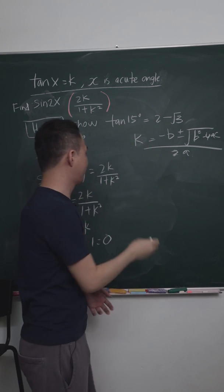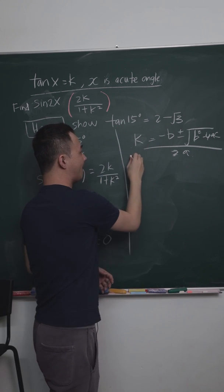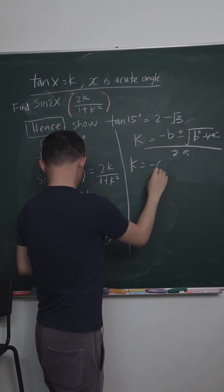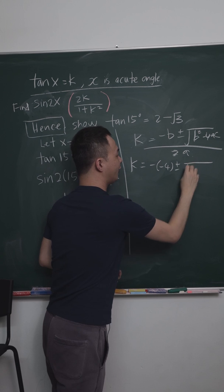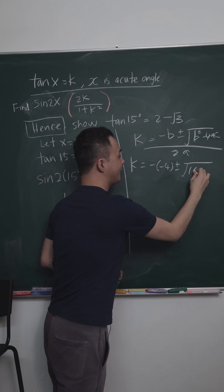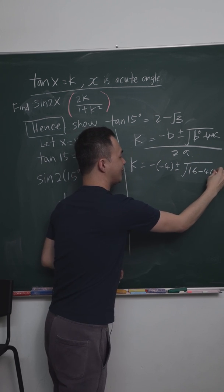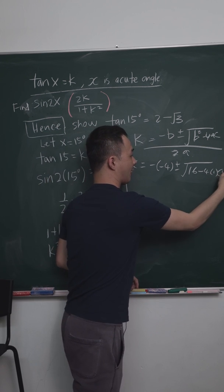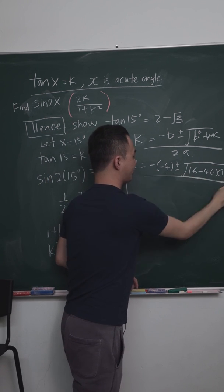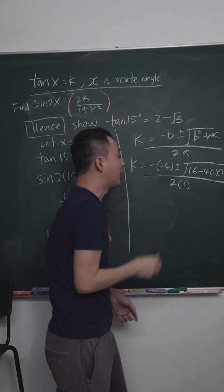Then I'm going to substitute here. So my k equals negative, b is negative 4, so it's minus 4. Plus minus square root of negative 4 squared is 16, minus 4a is 1, and my c will be positive 1, divided by 2a, 2, 1.